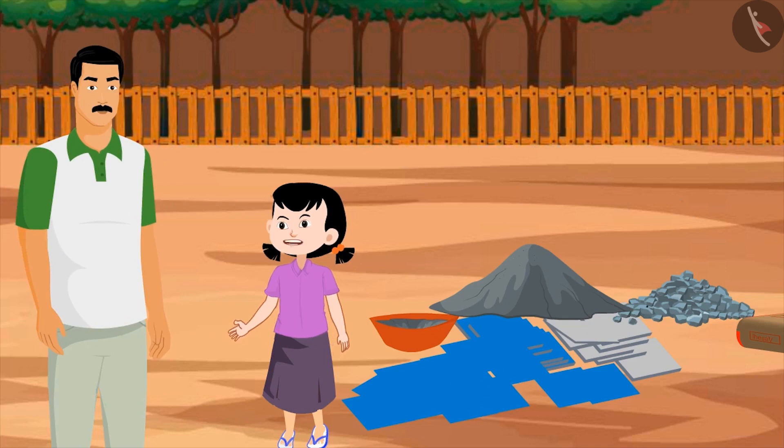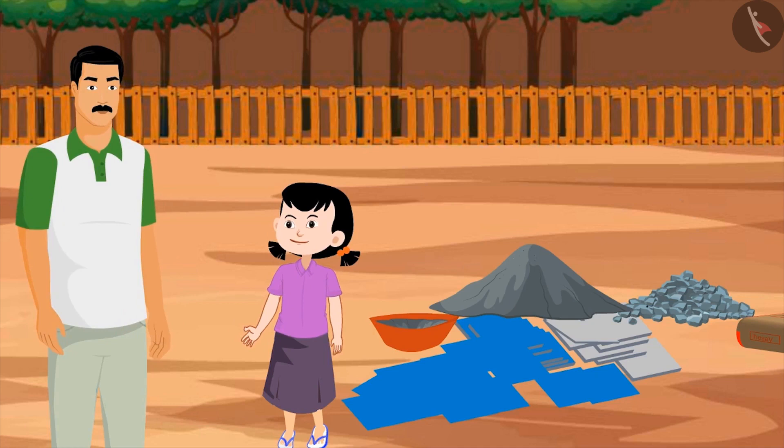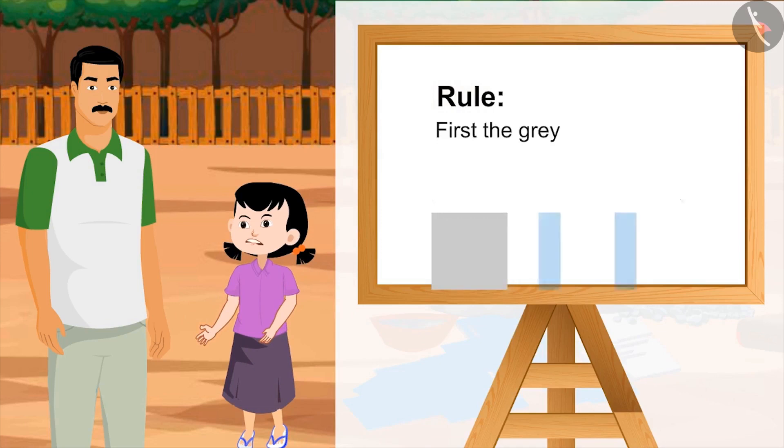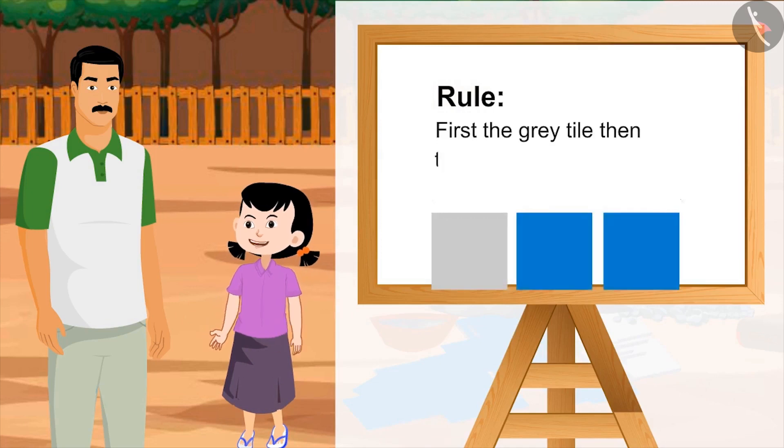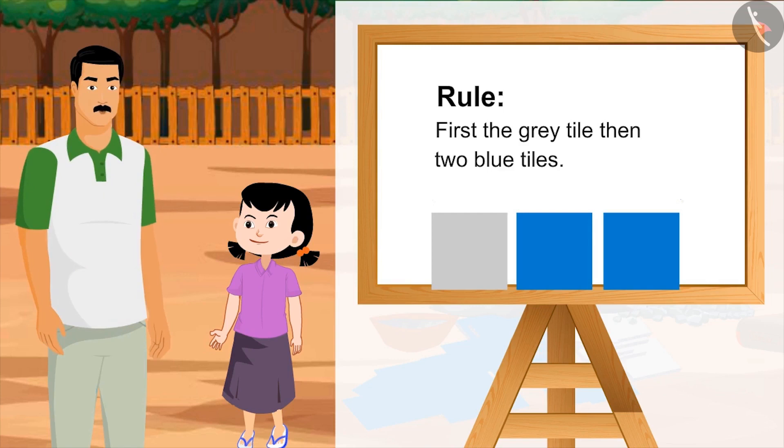Okay, uncle. What will be the rule for placing this? You say? We have blue tiles in more numbers. So, we can place one grey tile and then two blue tiles. Wow! You have given a great idea. Come, let's tile the courtyard using this pattern.